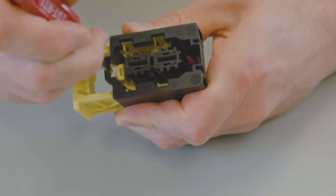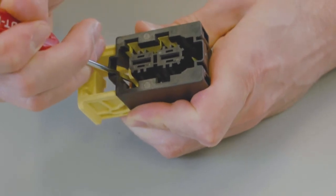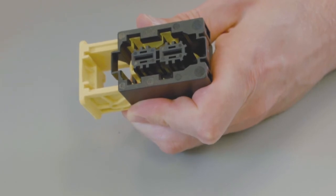After all the contacts have been inserted, push the integrated secondary lock into the locked position with a DT-RT1 removal tool or a screwdriver. Repeat this process for both connector halves.